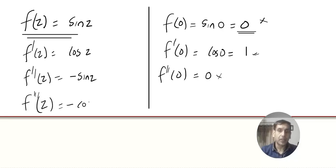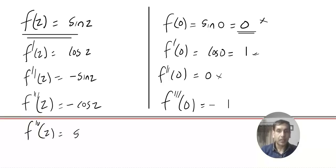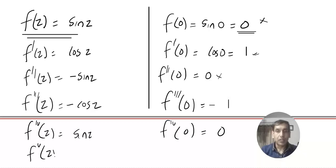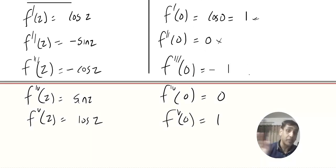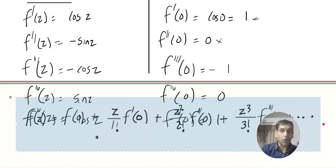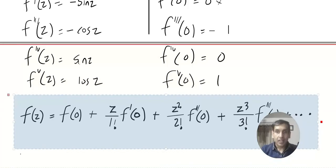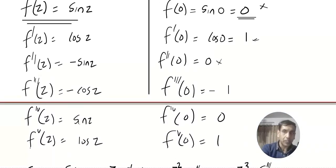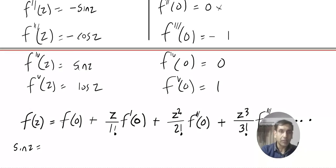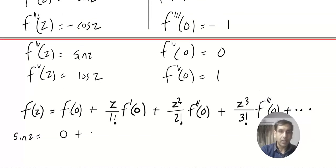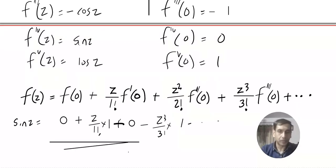The third derivative at zero gives minus 1. The fourth derivative at zero gives 0. The fifth derivative at zero gives 1. Using the McLaurin formula: sine z equals 0 (no use) plus z over 1 factorial times 1, plus 0, minus z cubed over 3 factorial times 1, and it continues in that pattern. So we can write out the full expansion.